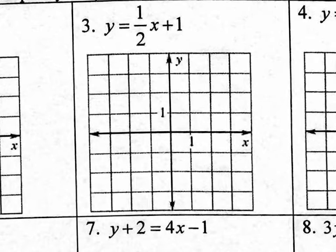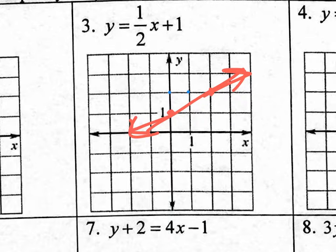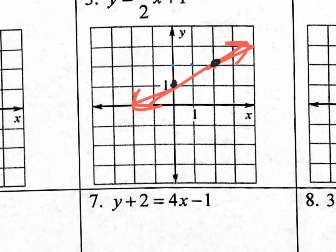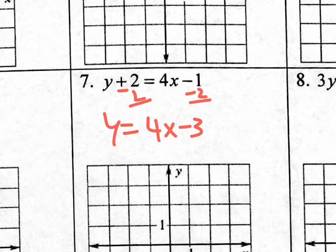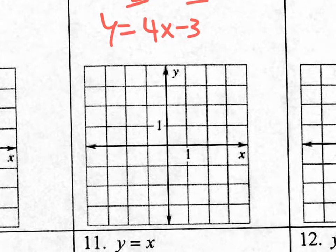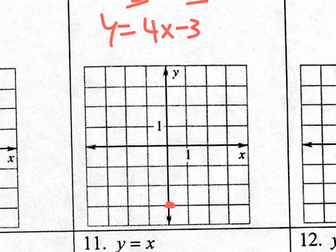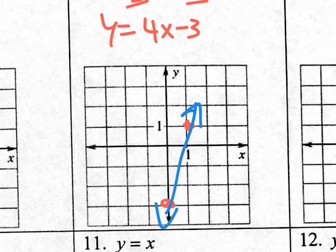Let me graph number 3 quickly. Where does it cross the y-axis? It crosses at 1. From that point I go up 1 over 2 and end up at a new point, then draw my line. For equations not in slope-intercept form, get them there first — for example, subtract 2 from both sides to get y equals 4x minus 3. Now go to B equals negative 3, then from that point go up 4 over 1 to the coordinate (1, 1) and draw your line. I hope this helps and you're able to do this worksheet with the substitute.